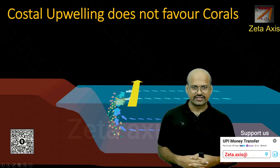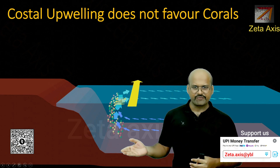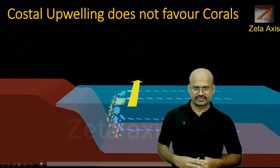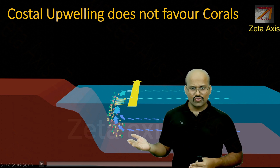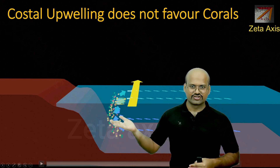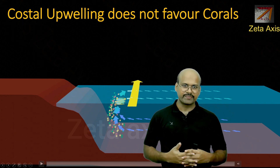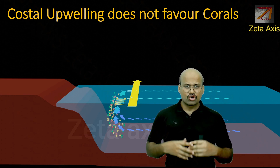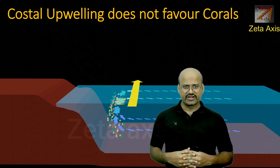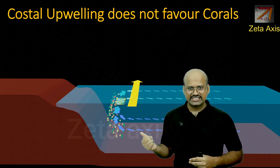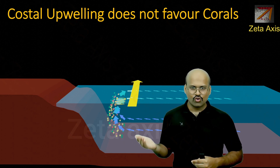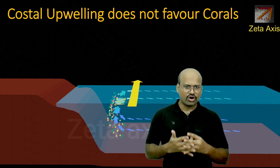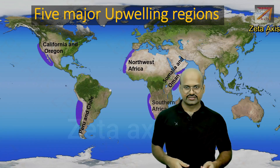Some coastal regions exhibit the phenomenon of upwelling, where water from the deeper parts of the ocean rises to the surface. This cold water reduces the surface temperature, making it unfavorable for corals. So regions of upwelling, where lower ocean waters are brought to the surface, are not favorable for coral formation.